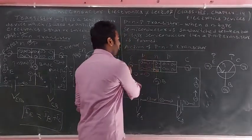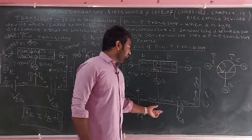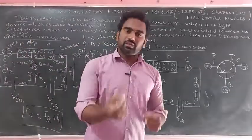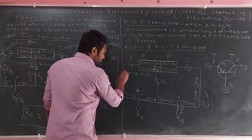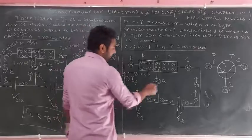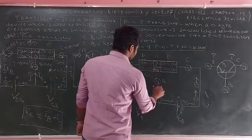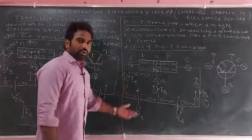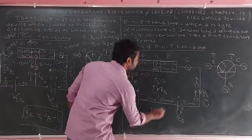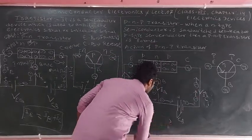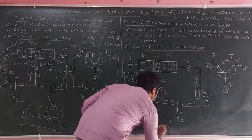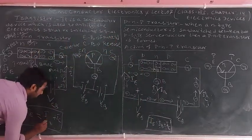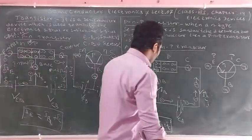The direction of current is opposite to the direction of free electrons. As electrons flow, current appears in the opposite direction. Applying Kirchhoff's law — incoming equals outgoing — we get I_E = I_B + I_C. This confirms that for both NPN and PNP transistors, the emitter current equals the sum of the base current and collector current.